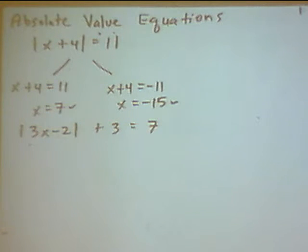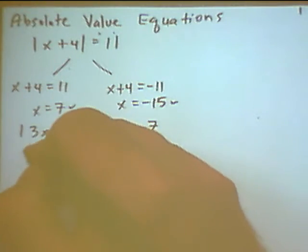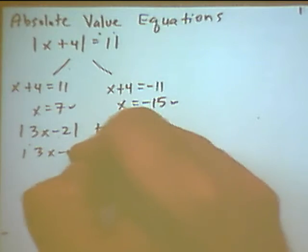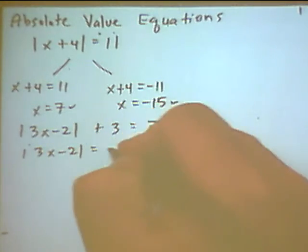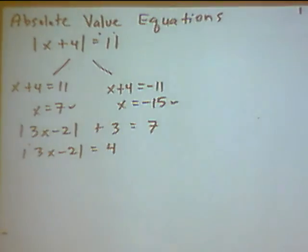All right. Absolute value equation. What's the first step? You have to get the absolute value by itself on one side. So I need to move this 3 to the other side. So the way I do that is to subtract 3 from both sides. So when I do that, I end up with absolute value of 3x minus 2 equals 4.